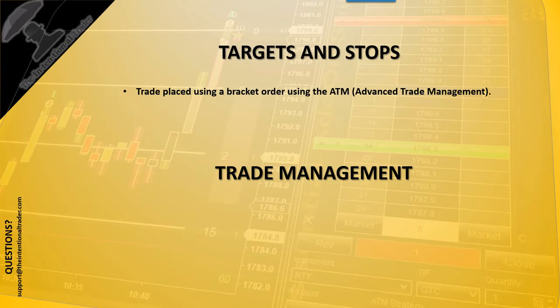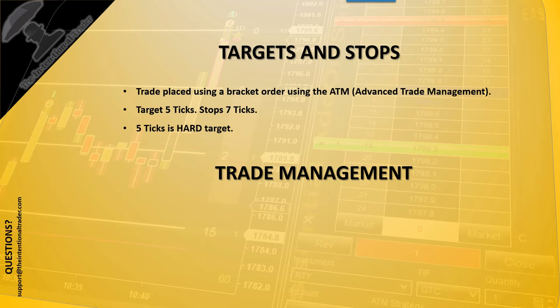Targets and stops — everybody wants to know. We do use a bracket order. We use a five-tick target and a seven-tick stop. The five-tick target is a hard target. The stop, however, is managed — if conditions change, we adjust it.